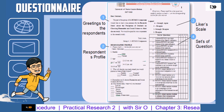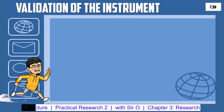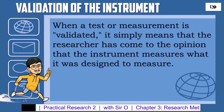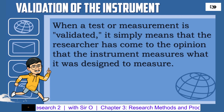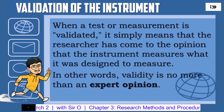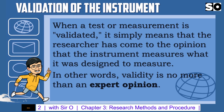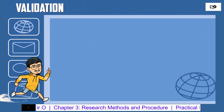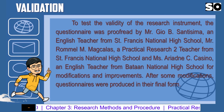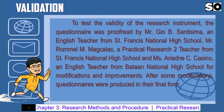Validation of the Instrument. When a test or measurement is validated, it simply means that the researcher has come to the opinion that the instrument measures what it was designed to measure. In other words, validity is no more than an expert opinion. Here is an example of validation — in this example, the researcher seeks the help of professionals to validate their questionnaire.